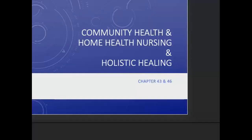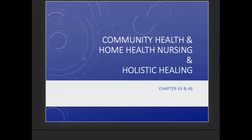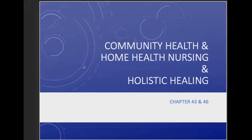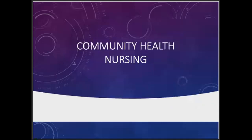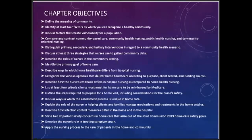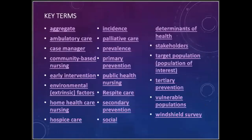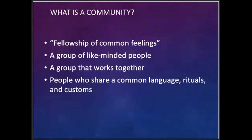This is going to be your community health, home health, nursing, and your holistic nursing, which is going to be your chapters 43 and 46 in your F.A. Davis book. Starting with our community health nursing, these are going to be your objectives and key terms that are in your F.A. Davis book and printed out on your outlines. We're going to start out with: what is a community?